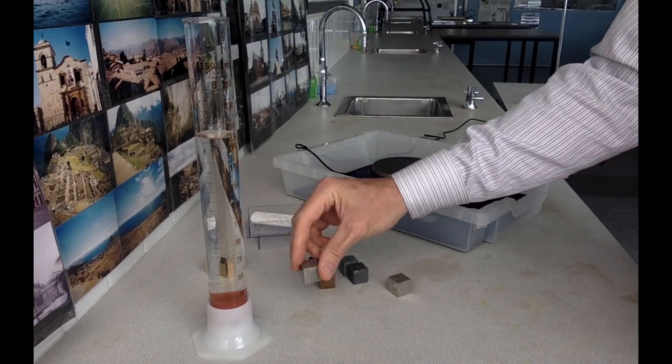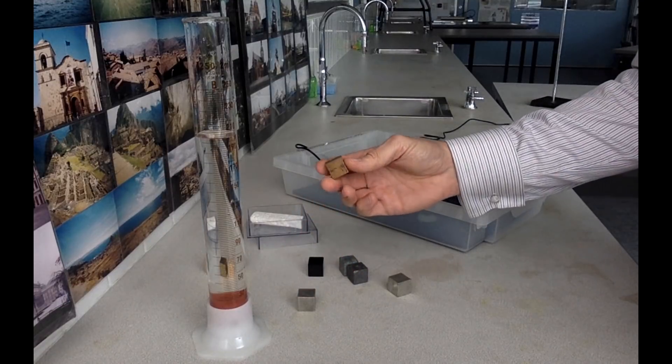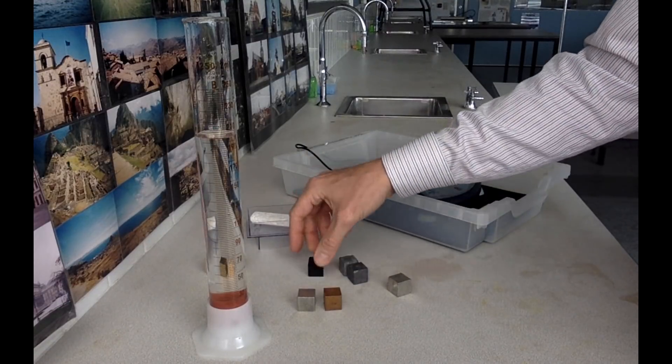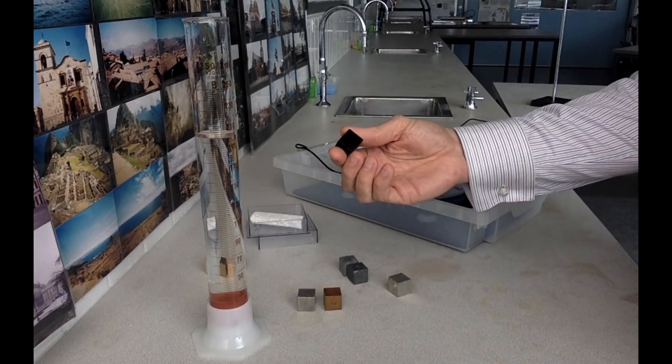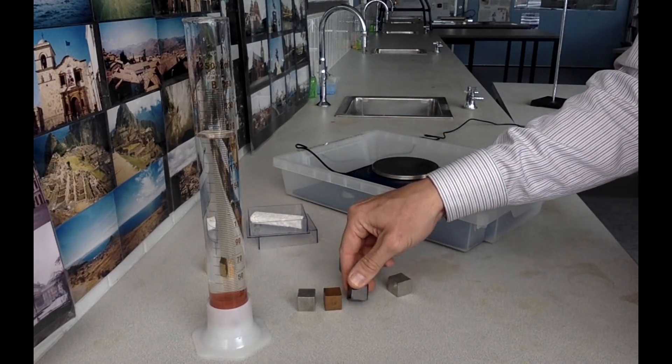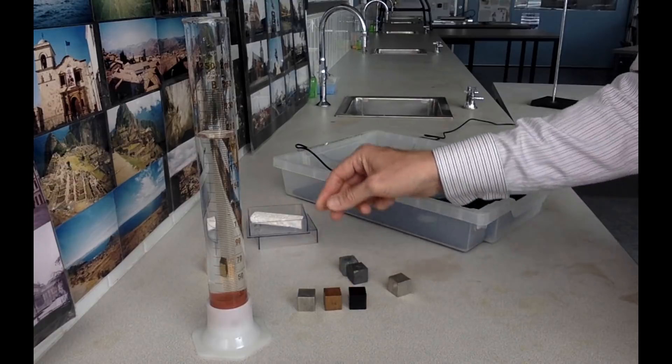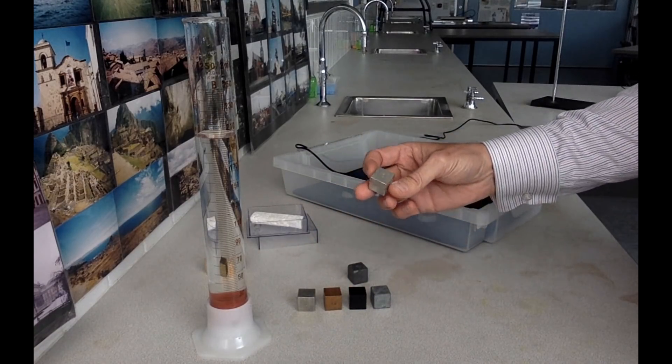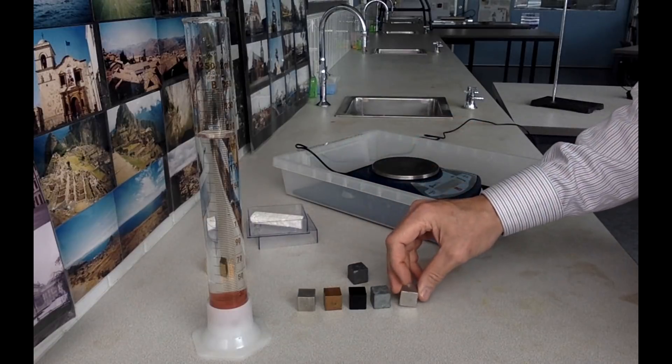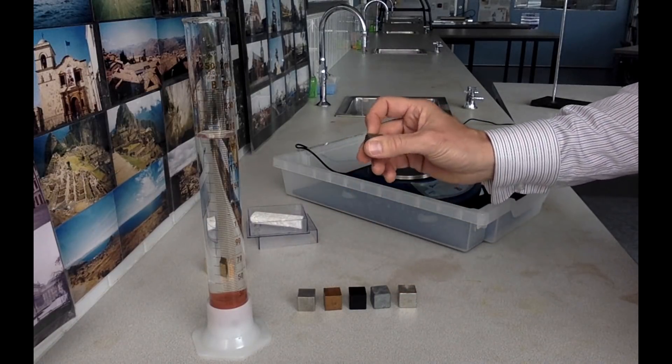We've got aluminum (Al), copper (Cu), iron painted black to stop it rusting (Fe - the black one), zinc (Zn), tin (Sn), and lead (Pb).